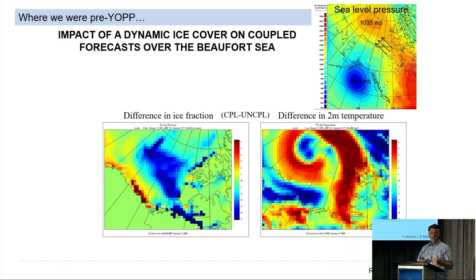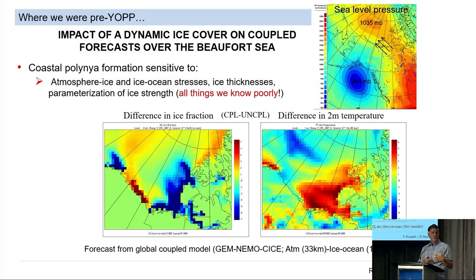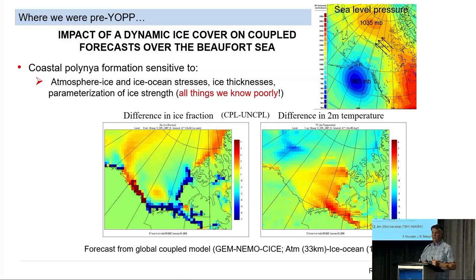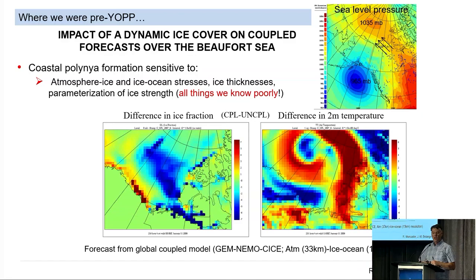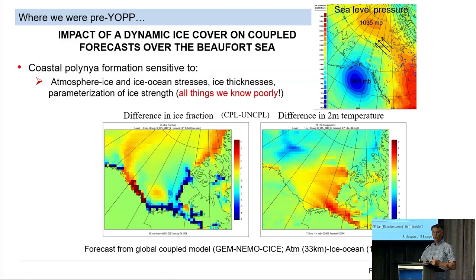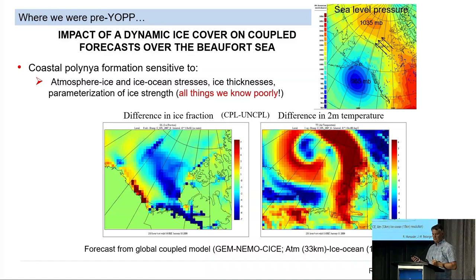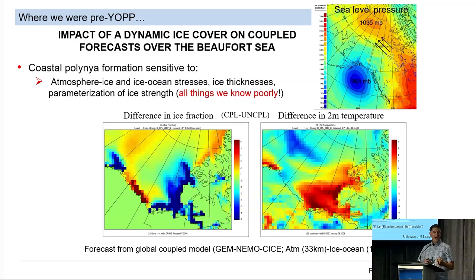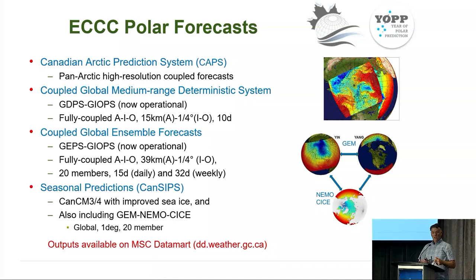At first this was very encouraging - we see a similar process to the Gulf of St. Lawrence in the Canadian Arctic. But as we began to dig into the problem, we found that the degree to which this coastal polynya was opening was very sensitive to the atmosphere-ice and ice-ocean stresses, to the ice thickness, whether the ice was able to deform as it moved offshore, and the parameterization of ice strength within the ice model. These were all things we knew poorly and were difficult to constrain, making it quite difficult to put together a prediction system that would reliably capture these kinds of events. This was the mindframe going into YOP that we wanted to address.